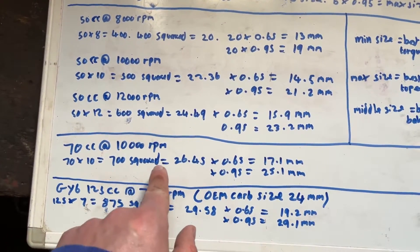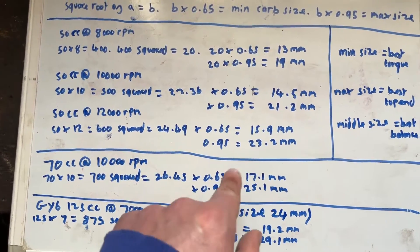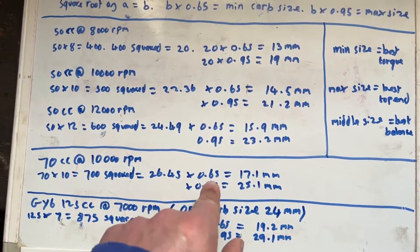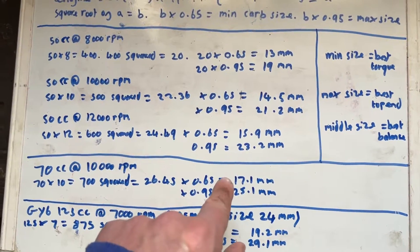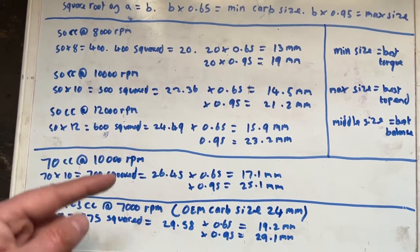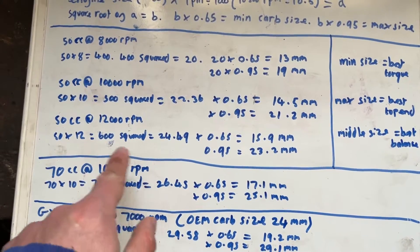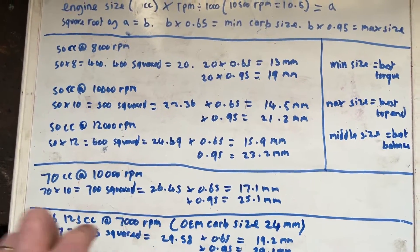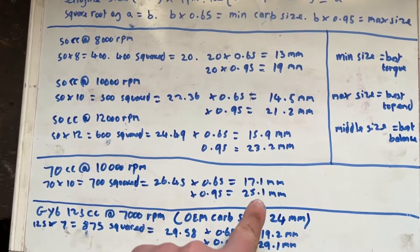So we do the same calculation again, gives us 26.45. So again, we times by 0.65 and find the minimum carburetor size we need for a 70 kit at this RPM is 17.1 and the maximum size is 25.1.